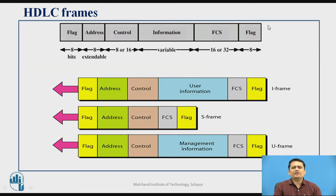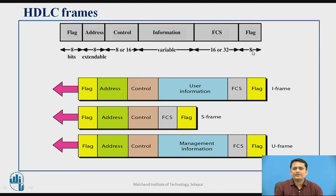This is the general format for the HDLC frame and how it varies for the three kinds of frames. In general, an HDLC frame starts with a flag bit of 8 bits and ends with a flag bit again. Then you have the address field, control field, information field, and FCS — Frame Check Sequence.